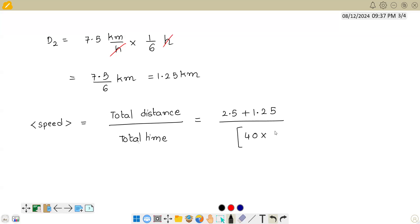So 40 minutes - we need to convert to hours. 1 minute means 1/60 hour. So we can solve this now: 60 by 40 into 3.75.